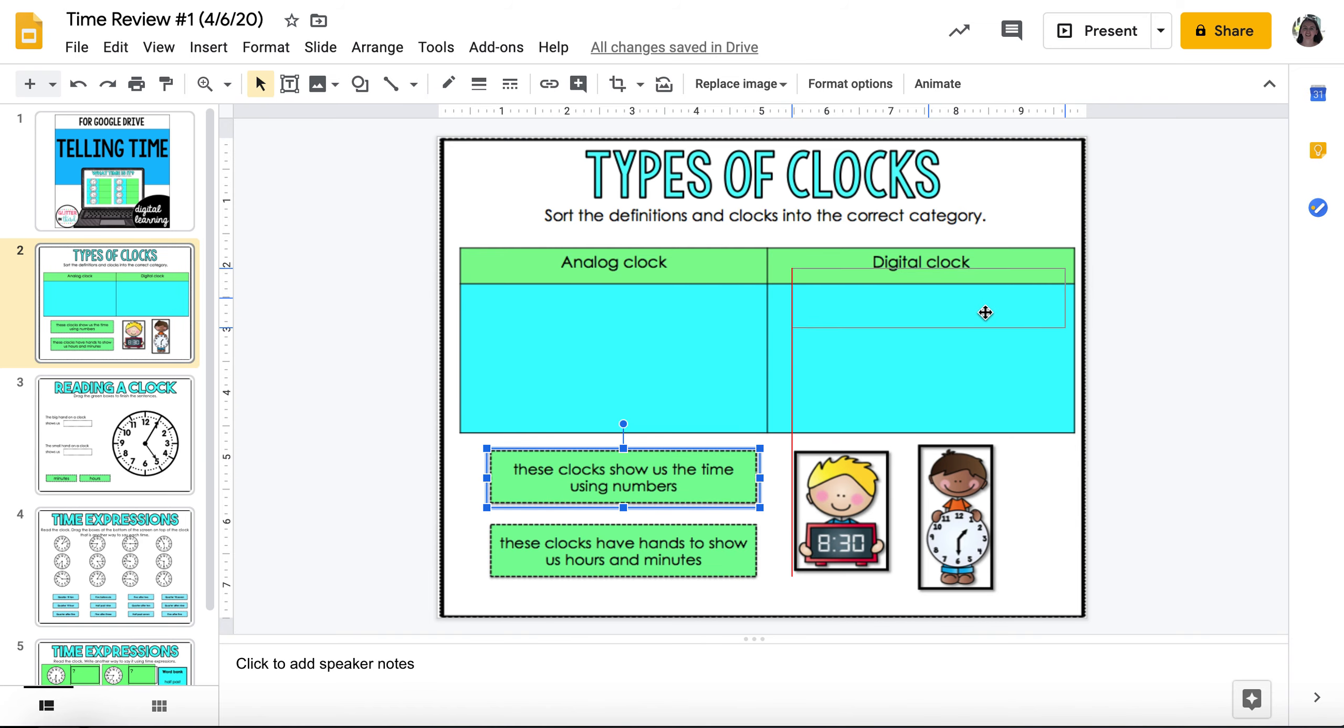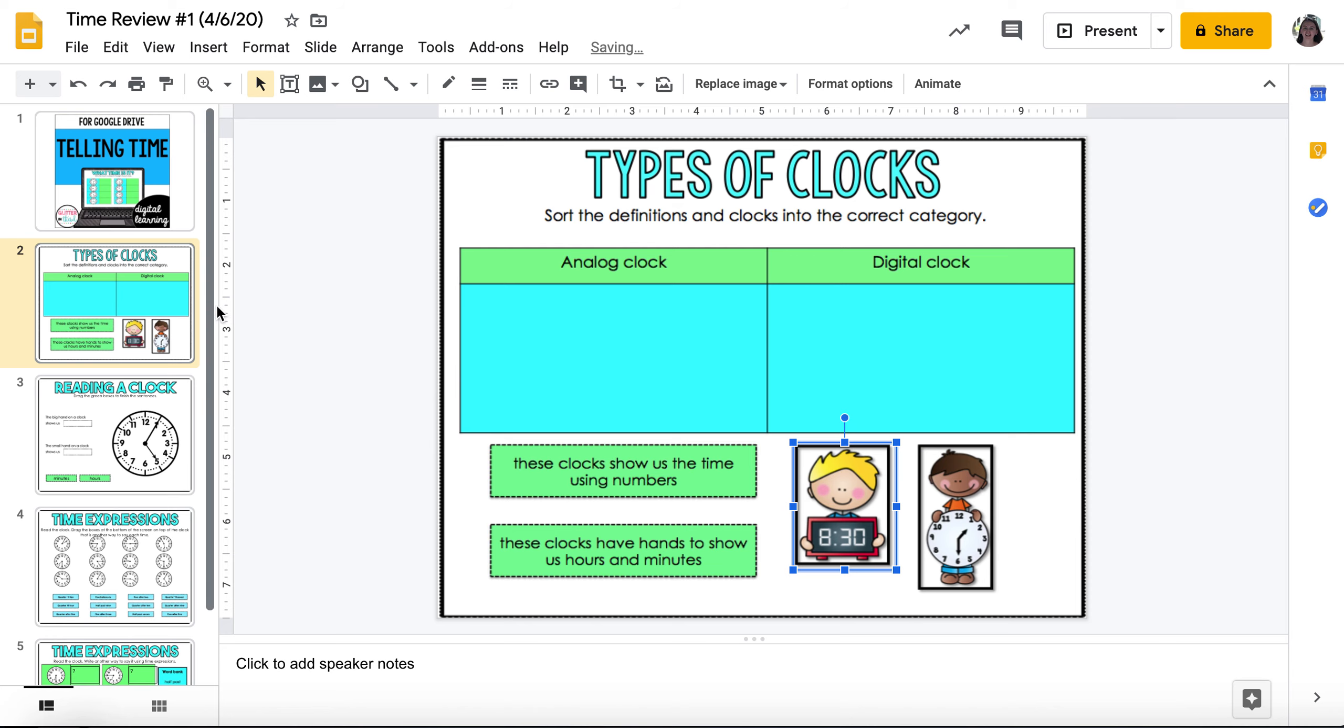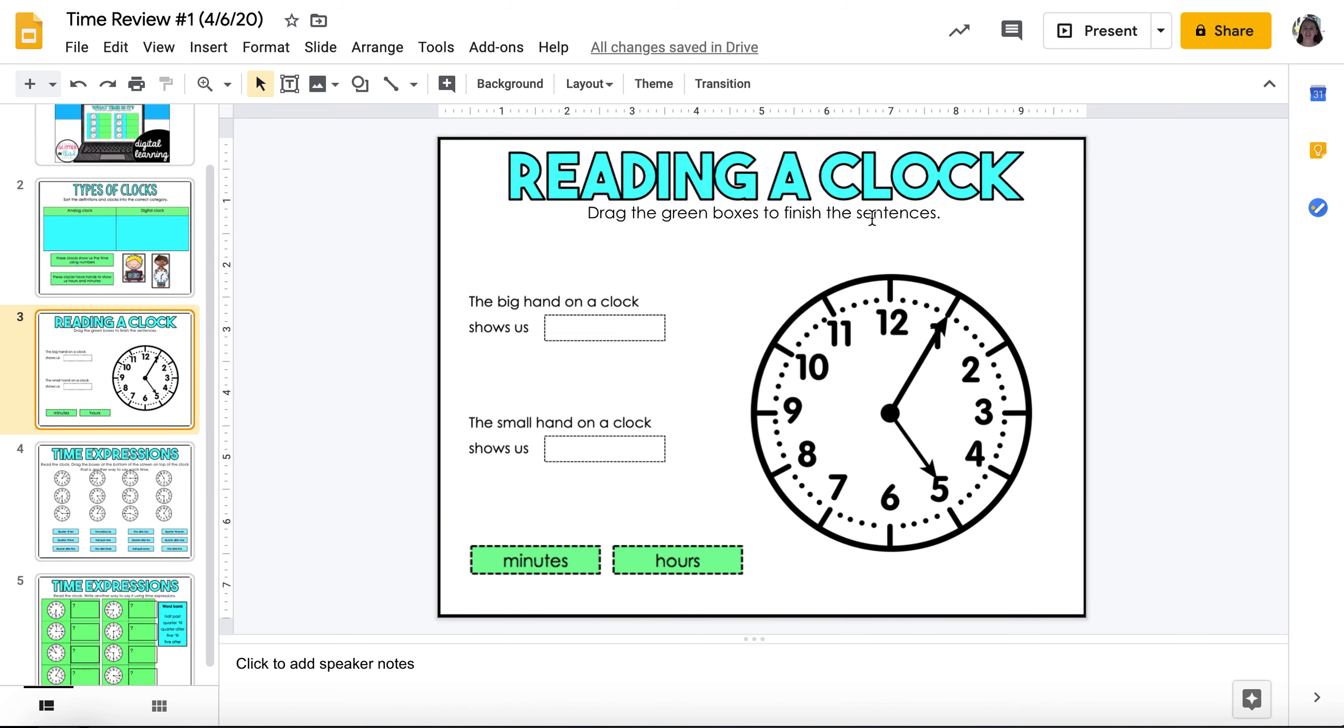All right, so your first slide is going to be telling me the two different types of clocks, as you know, an analog clock and a digital clock. Click and drag the definition of where it's supposed to go. Click and drag it. The definition and also the picture, click and drag the picture of where it's supposed to go.